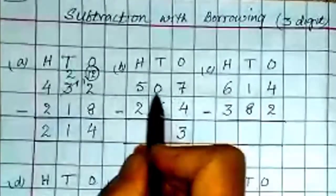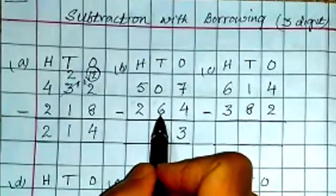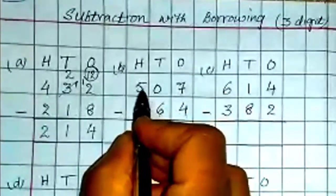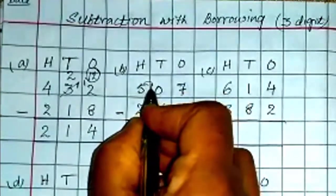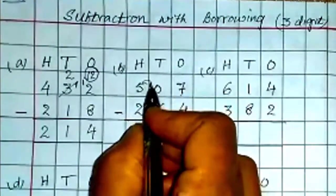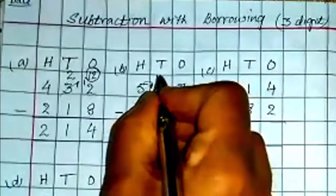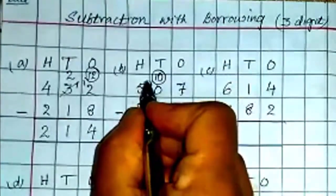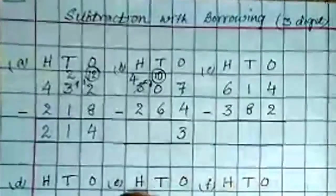Now look at tens place. You have 0 and 6. So 0 is less than 6. We cannot give away 6 from 0. So here you need to borrow from hundreds place. That is 100 means it is 10 tens. So 10 plus 0 is 10. Now here it will be 1 less, that is 400.